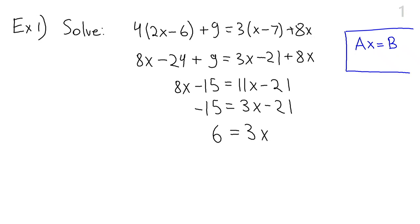So now we have simplified this complicated linear equation into something of the form Ax equals B. Now we divide both sides by 3 and we get that our answer is x equals 2. As with any equation you can always check your answer by plugging in x equals 2 in the original equation and making sure both sides equal the same thing.